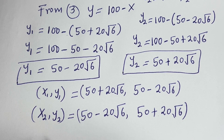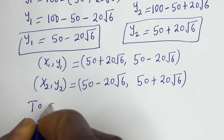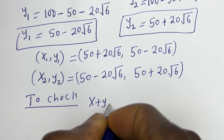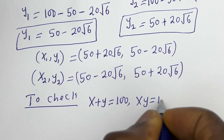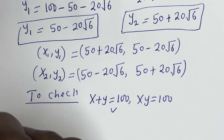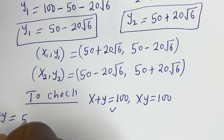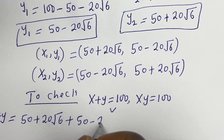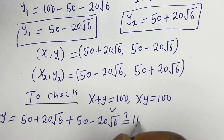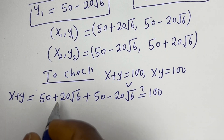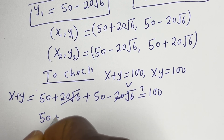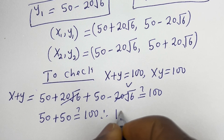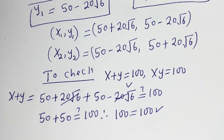Let's check. We have the given equations: x plus y equals 100, and xy equals 100. For the sum: x plus y equals (50 plus 20 root 6) plus (50 minus 20 root 6). The root 6 terms cancel, leaving 50 plus 50, which equals 100. This is true.